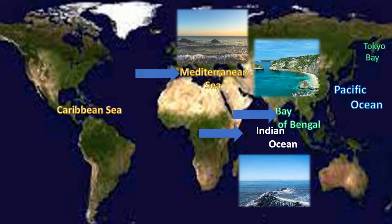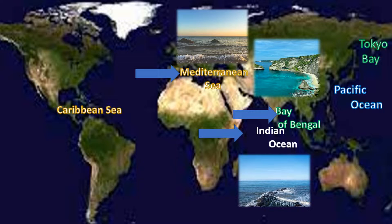Tokyo Bay in Japan is surrounded by cities like Tokyo, Yokohama, and Chiba. It's a hub for shipping, fishing, and recreational activities.